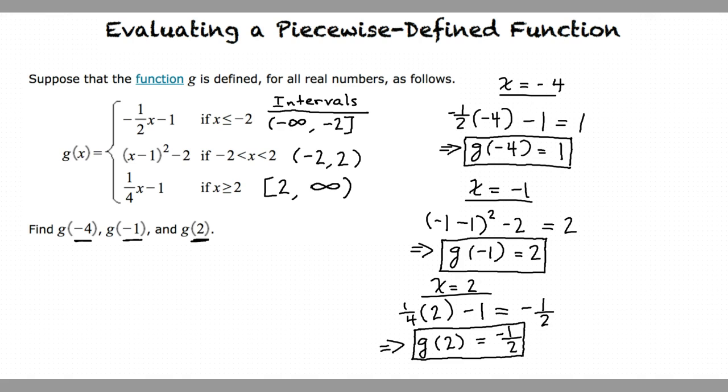These are our final answers. So to evaluate a piecewise defined function at certain values of x, we find the part of the function in which the desired x value fits, substitute that value into the function part and then solve. Exactly. Now you're ready to try some more examples.